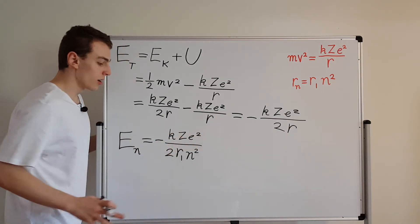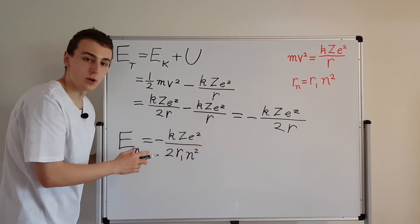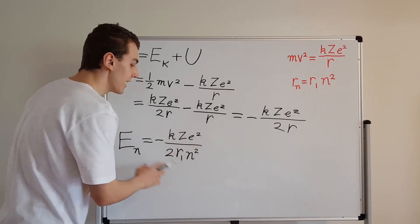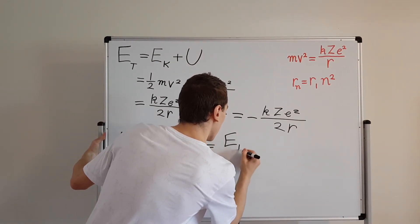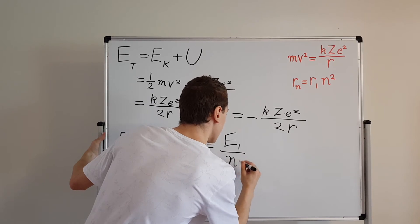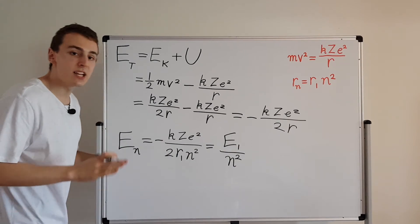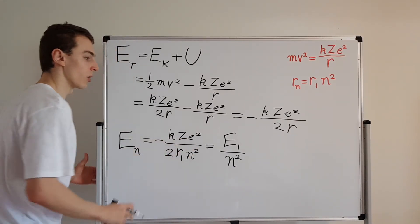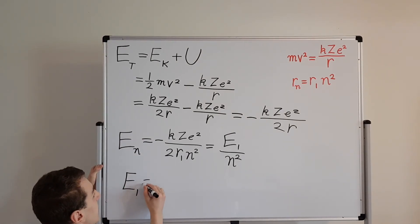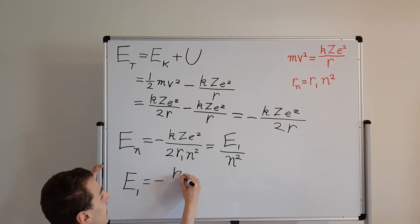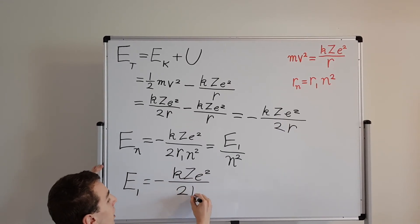So this expression over here, what do we see? We see a constant. This is a constant, r1. All of these guys in the top are constants, so we can group them in together. And we can write this as E1 over n squared. This is n squared on the bottom. And what is E1? E1 is a negative value. E1 is all of these constants together. I'll write it explicitly in this bottom area here. So E1 is equal to minus kZe squared over 2r sub 1. So this over here, this is the lowest energy that the electron can have.